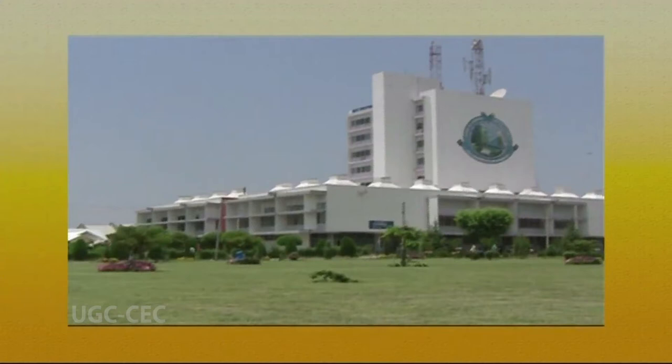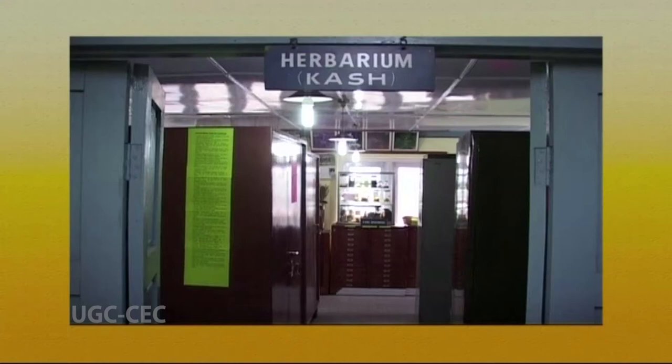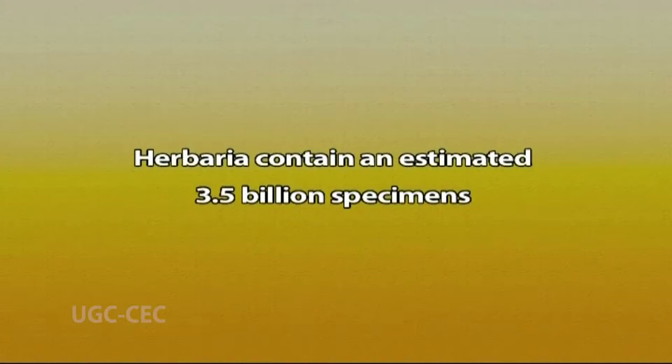For example, the herbarium at Kashmir University has the code KASH, located in the Centre for Biodiversity and Taxonomy. World over there are about 3,400 herbaria with about 10,000 associated curators. Collectively, the world's herbaria contain an estimated 3.5 billion specimens — a huge collection documenting the Earth's plant diversity collected over the past 400 years.